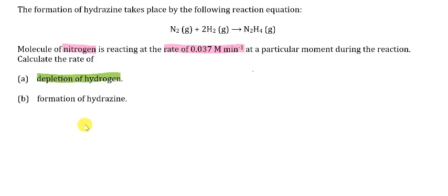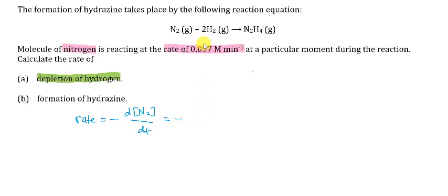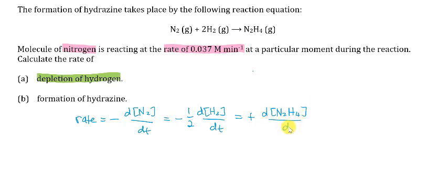The differential rate equation for this reaction is: rate equals — 1 mole of nitrogen is a reactant so it decreases with time: negative d[N2]/dt; 2 moles of hydrogen is also a reactant, so it decreases with time: negative 1/2 times d[H2]/dt; and 1 mole of our product hydrazine increases with time: positive d[N2H4]/dt.